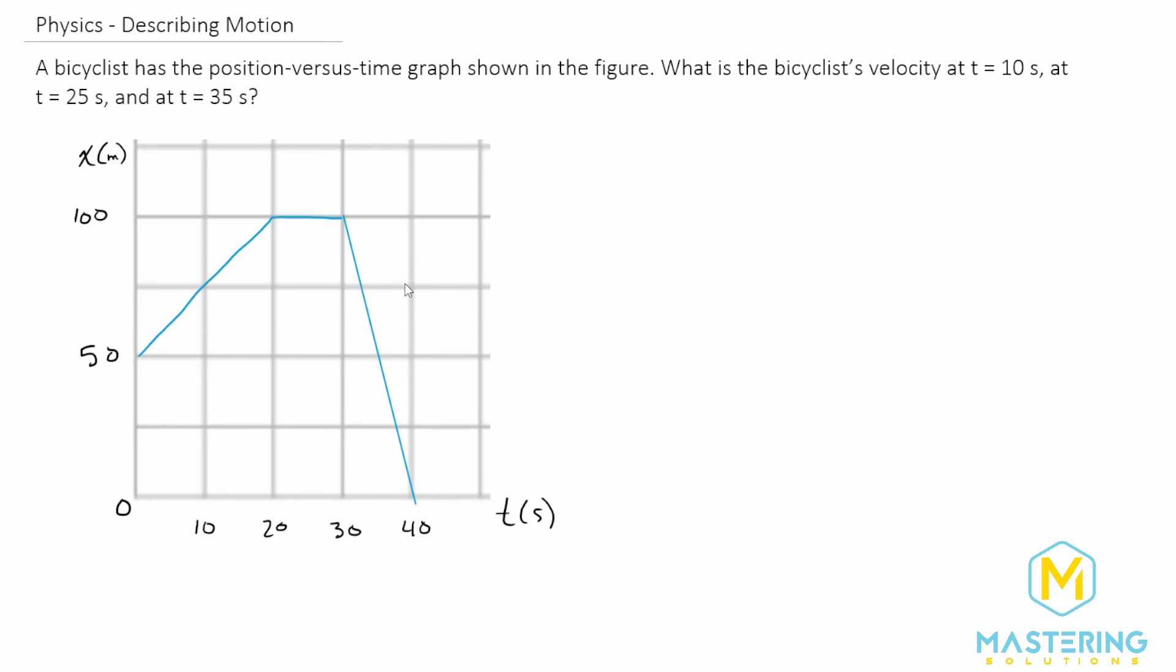Welcome to Mastering Solutions. In this problem they give us a position versus time graph and they want us to figure out what the person's velocity was at 10 seconds, 25, and 35.